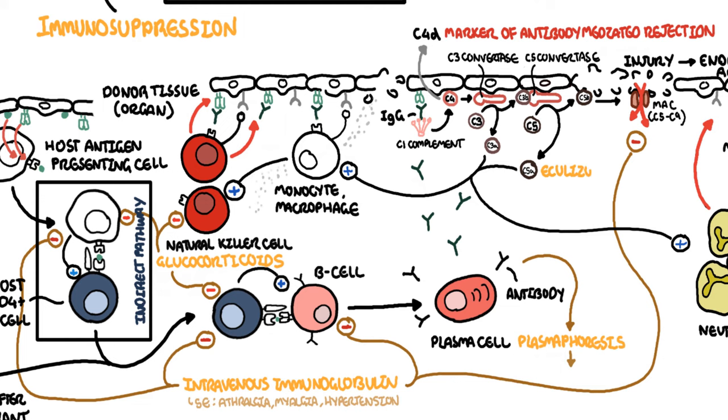Eculizumab is a monoclonal antibody directed against the C5 fragment of the complement cascade and inhibits the generation of the membrane attack complex we have learned. The side effect is that mainly it increases the risk of Neisseria meningitidis infections.